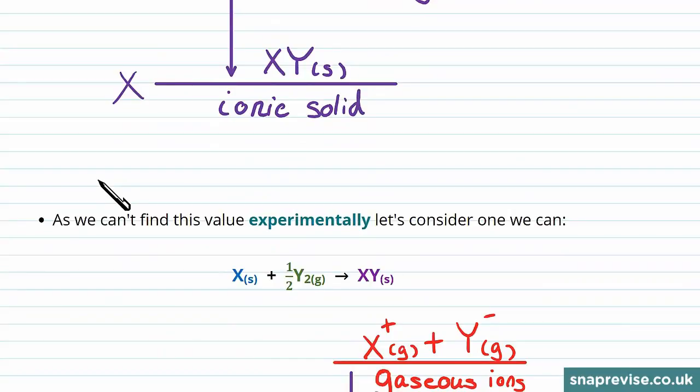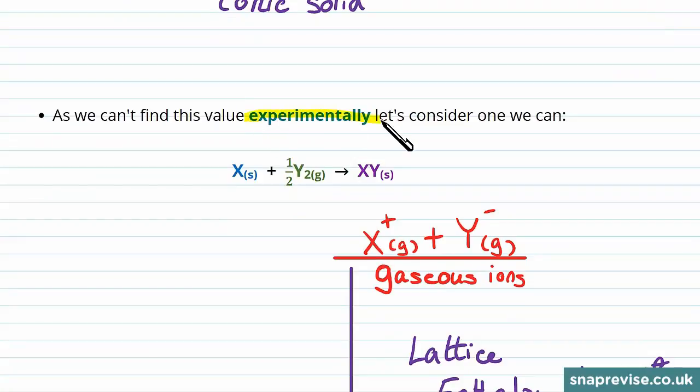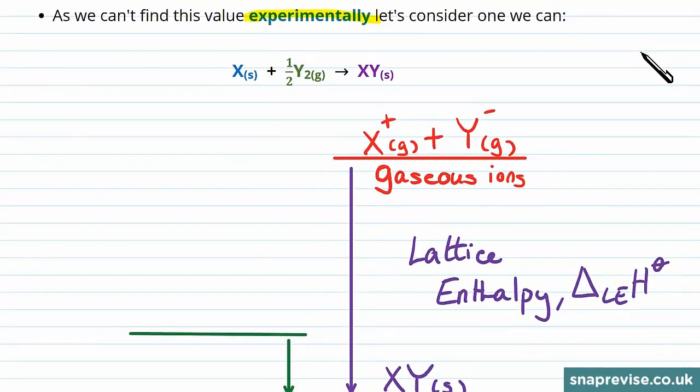One value that we can find experimentally is the enthalpy change of formation of the ionic solid, XY(s). So remember that the enthalpy change of formation is the energy released when we take the elements in their standard states. So we'll imagine that's a solid for X and a diatomic gas for Y, and then you form the solids you want.